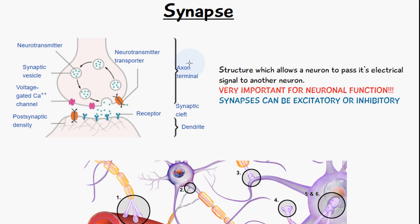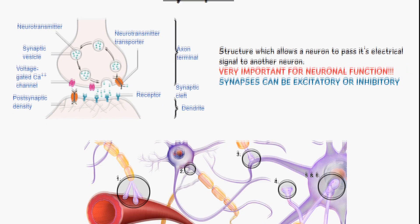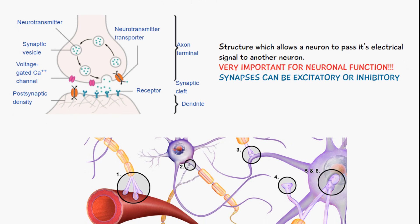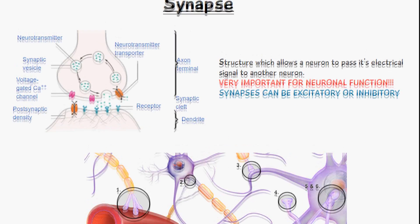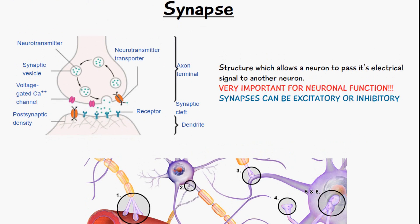The influx of calcium causes synaptic vesicles, which contain neurotransmitters, to move and fuse onto the pre-synaptic membrane. They then release their neurotransmitters into the synaptic cleft. These neurotransmitters bind onto receptors on the post-synaptic membrane, which initiates an action potential in the dendrite of the other neuron. That's the basics of how a synapse works.